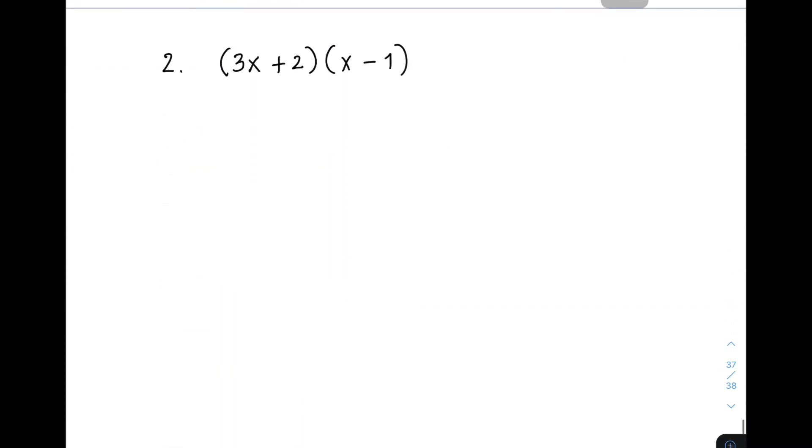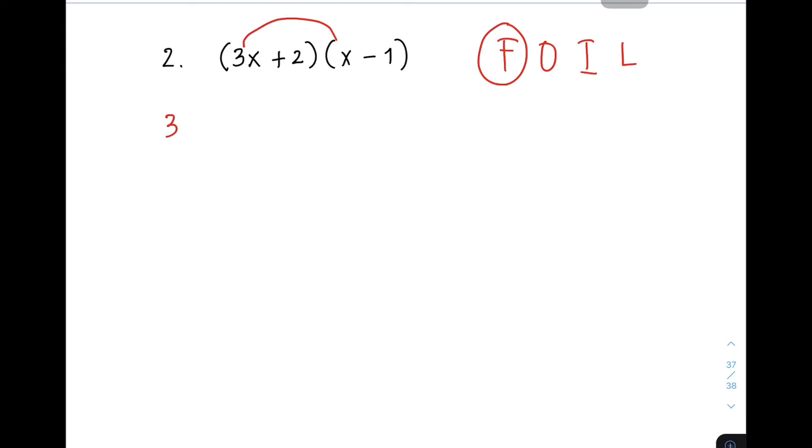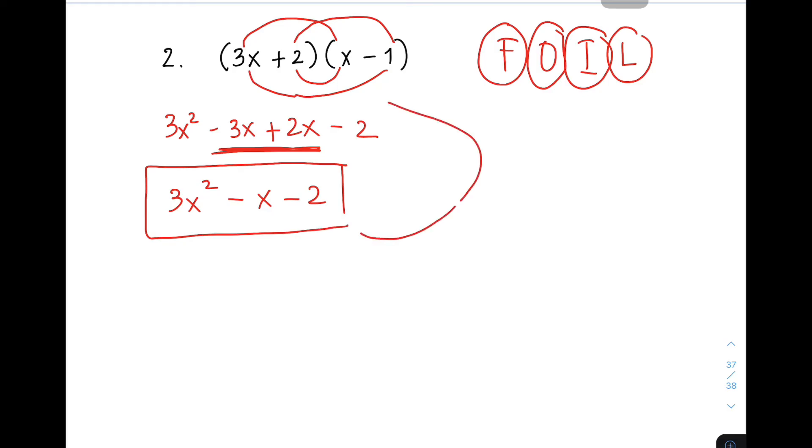So let's move on with the last example, applying the FOIL method. We have here 3x plus 2 times x minus 1. So applying FOIL, you have F, O, I, L. For the first terms, you have 3x times x. That will give you 3x squared. Now, for the outer terms, you have 3x times negative 1. That will give you negative 3x. Now, for the inner terms, your I. That will give you plus 2x. And then for the last terms, for your L, 2 times negative 1, their product is negative 2. And simplifying your inner terms, you have 3x squared. And that will be negative x or negative 1x minus 2. This is the product of our last example.